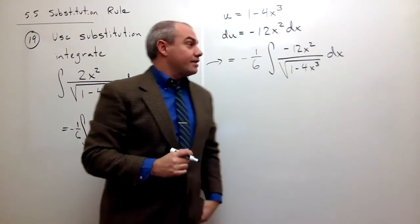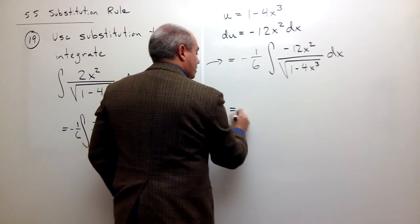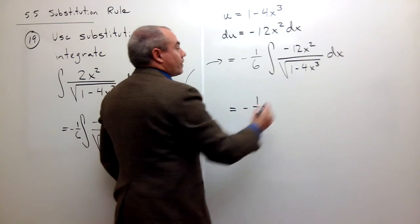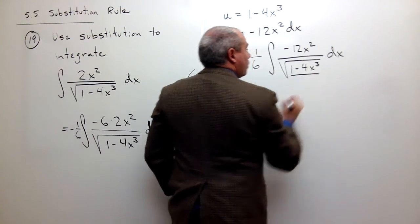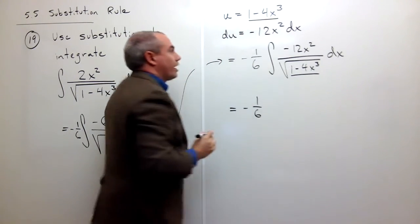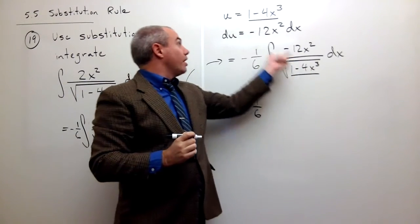So now I can rewrite this thing as, I have a negative 1/6. Okay, remember this guy, 1 minus 4x cubed, 1 minus 4x cubed, that's going to become u.